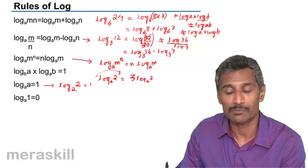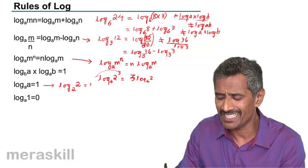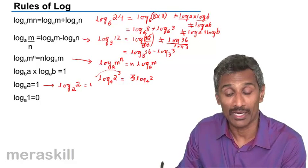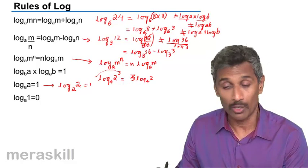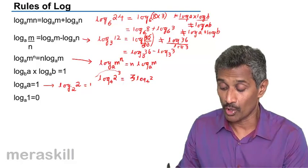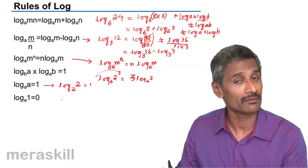If we convert it to exponential form, 2 raised to 1 equals 2. Log of any number to the same base will always be 1. This is an important rule. Log of 7 to the base 7 is 1. Log of 10 to the base 10 is 1 as well.